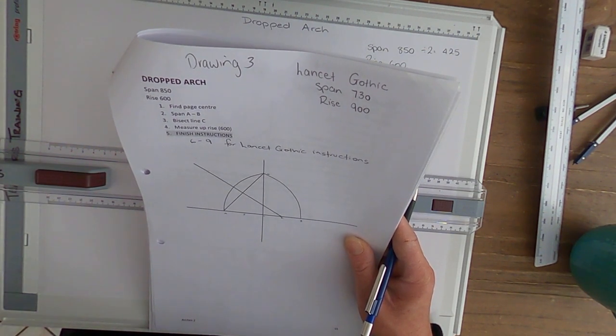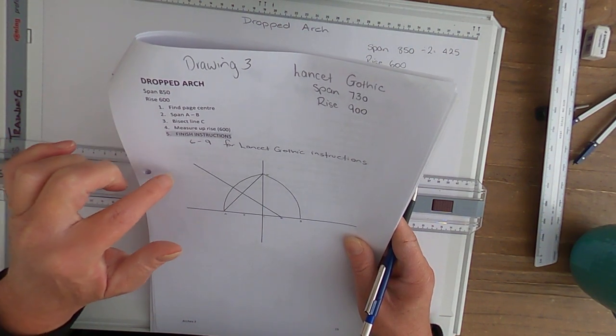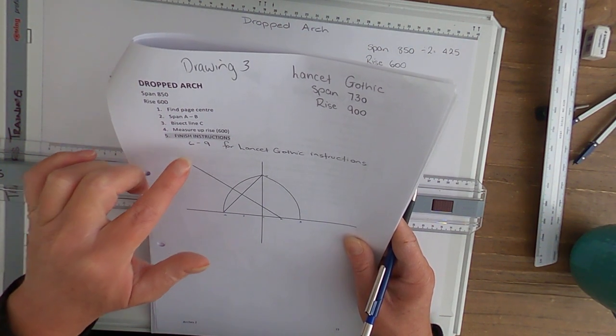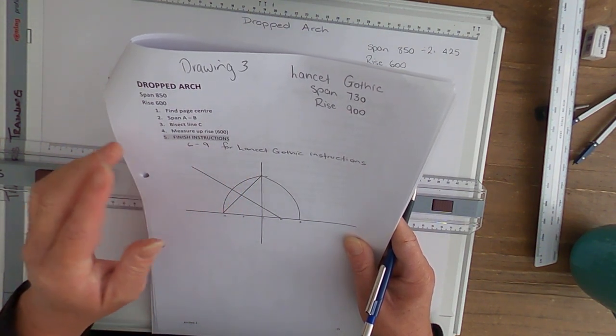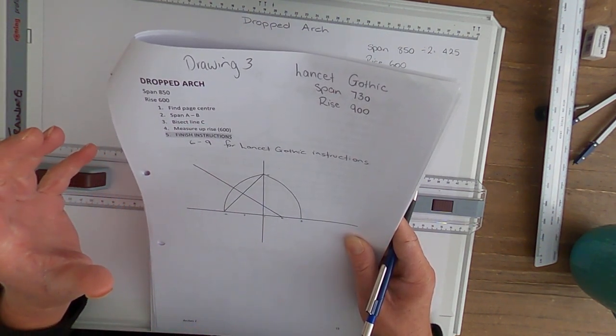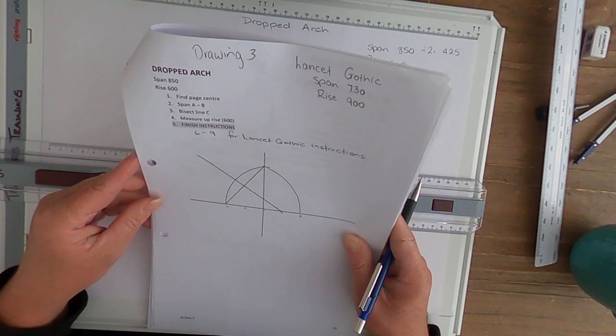Now we'll follow 1 to 5 in the instructions with the Dropped Arch, then I'll go to 6 to 9 and continue with the Lancet Gothic because they're very similar in drawing these drawings.